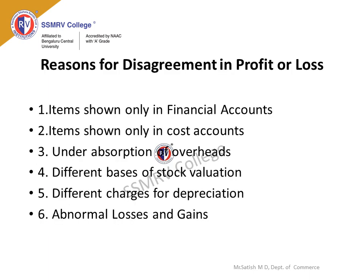Reasons for Disagreement in Profit or Loss. The various reasons which create a difference between Cost and Financial profit or loss are as follows. The first reason is items shown only in Financial Accounts. Some items of income and expenses are included only in Financial Accounts but are not shown in Cost Accounts, such as: profit on sale of fixed assets, interest received on investments, dividend received on investments, rent, brokerage and commission received, premium on issue of shares, and transfer fees received. All these are income items.